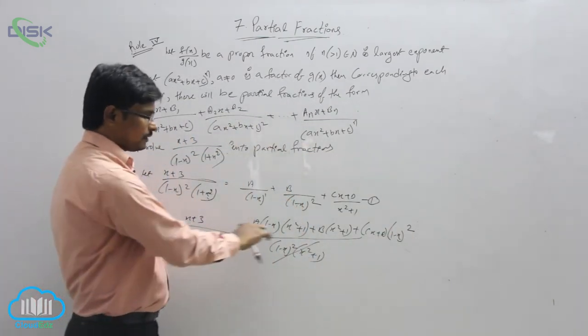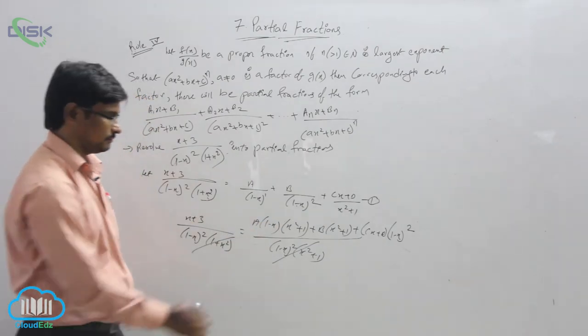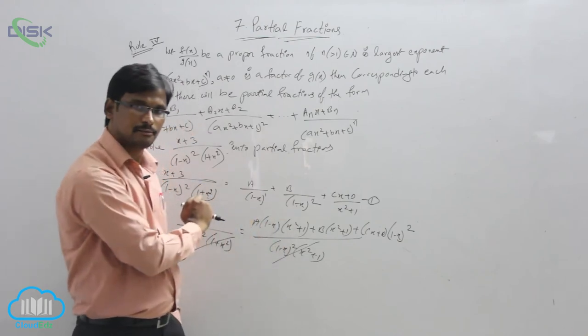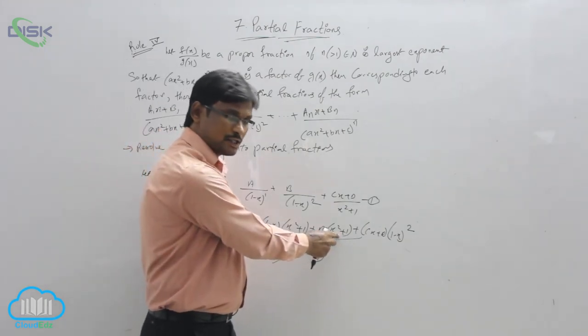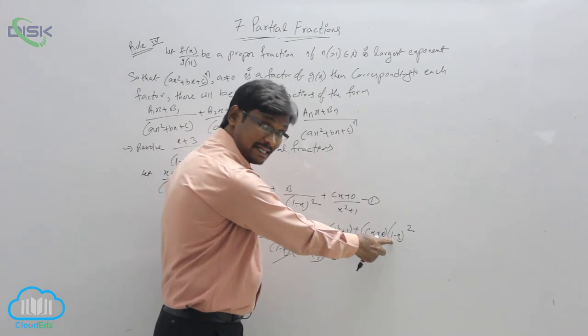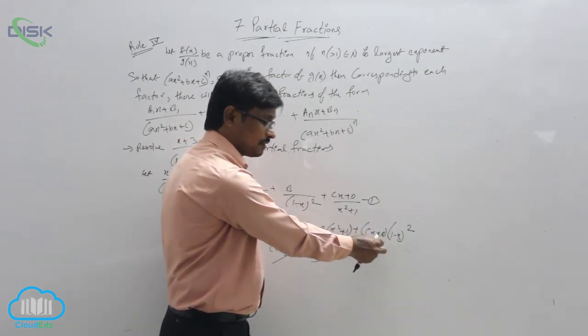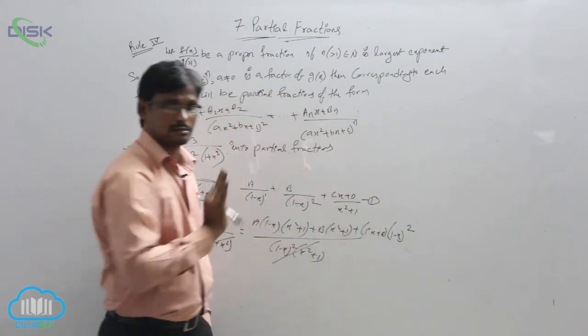Now on both sides, what we will do generally here? Multiply these two and then multiply with A. Multiply these two. First expand this, it is in the form of A minus B whole square. Expand this, then multiply with this one, we will get 1 also.